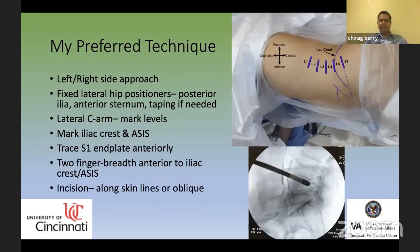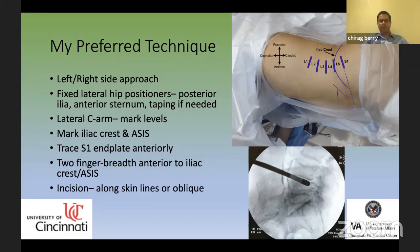My preferred technique is mostly from the left side due to the anatomic advantage, though right-sided approaches are possible in rare cases — especially if a patient has had left-sided prior surgery with anticipated scarring, or for scoliosis with concavity to the right to address multiple target levels. I use fixed lateral hip positioners — a posterior positioner over the posterior iliac wings and an anterior positioner at the lower half of the sternum. I may add tape over the greater trochanter for more fixity in patients with high BMI.